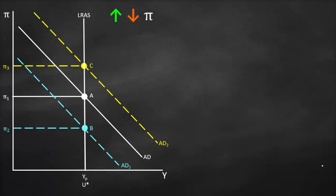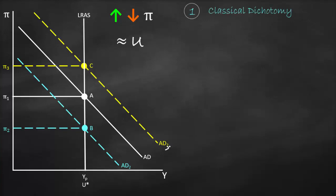Based on this model, we can see that inflation could be higher or lower, but unemployment would always be constant at the natural rate of unemployment. This can be explained by two theories. The first one is Classical Dichotomy.